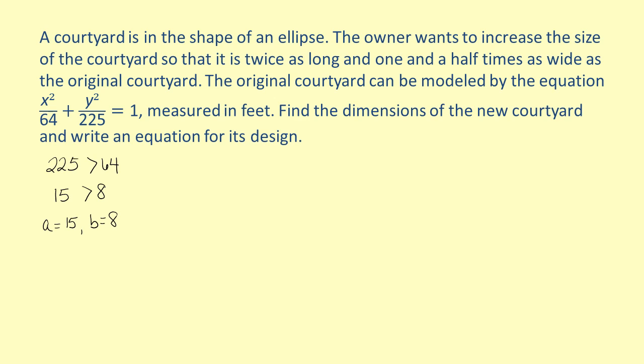Now we can multiply both values by 2 to find the length and width of the original courtyard. By doing this, we can see that the length of the original courtyard is 30 feet and the width is 16 feet. The problem asks us to find an ellipse that is twice as long.